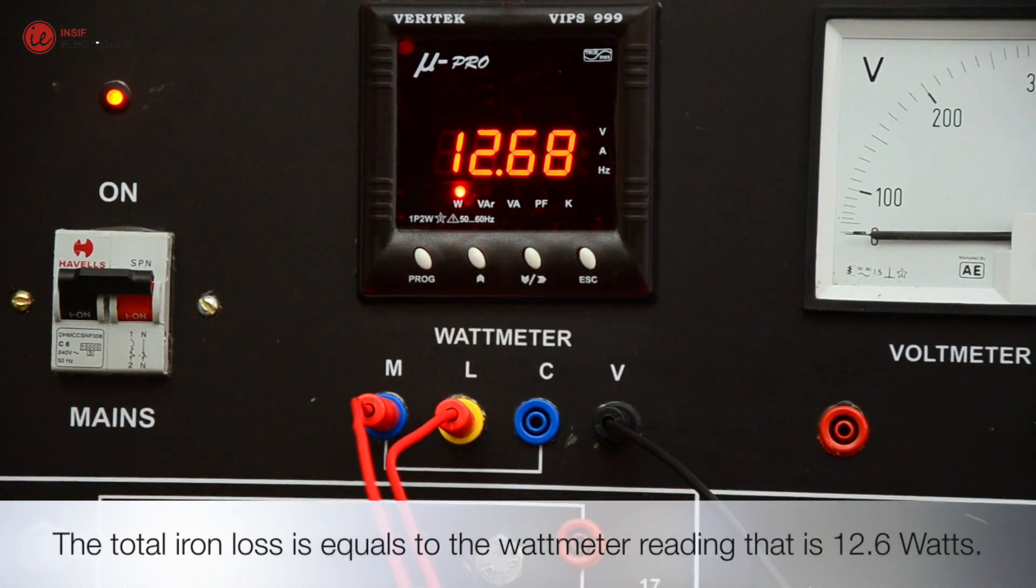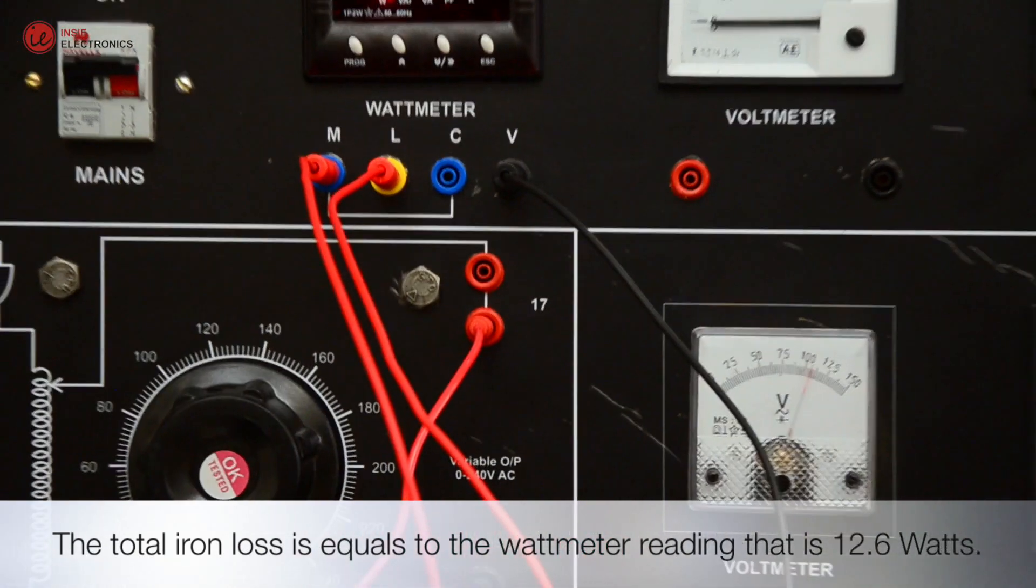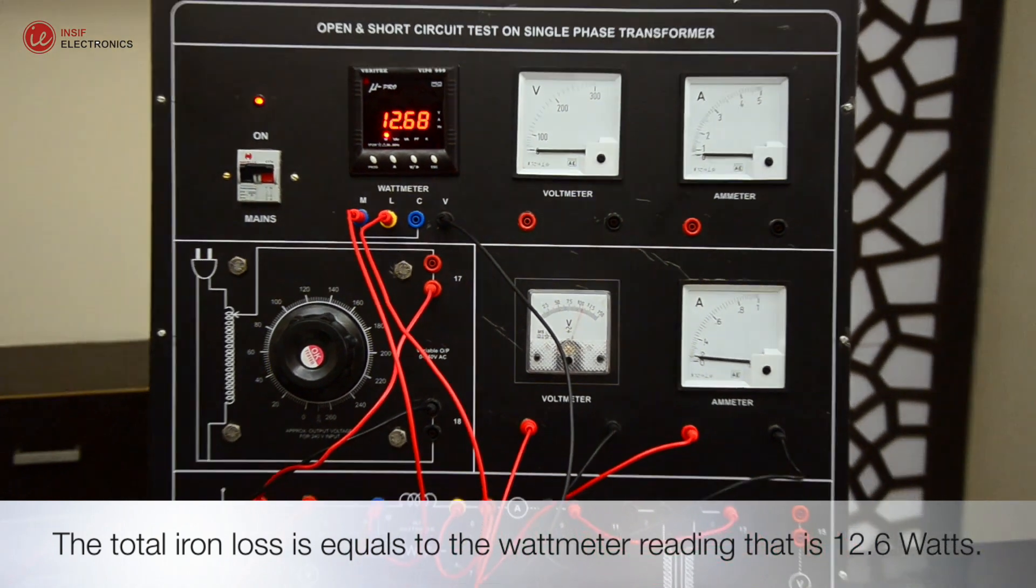The total iron loss is equals to the watt meter reading, that is 12.6 Watts.